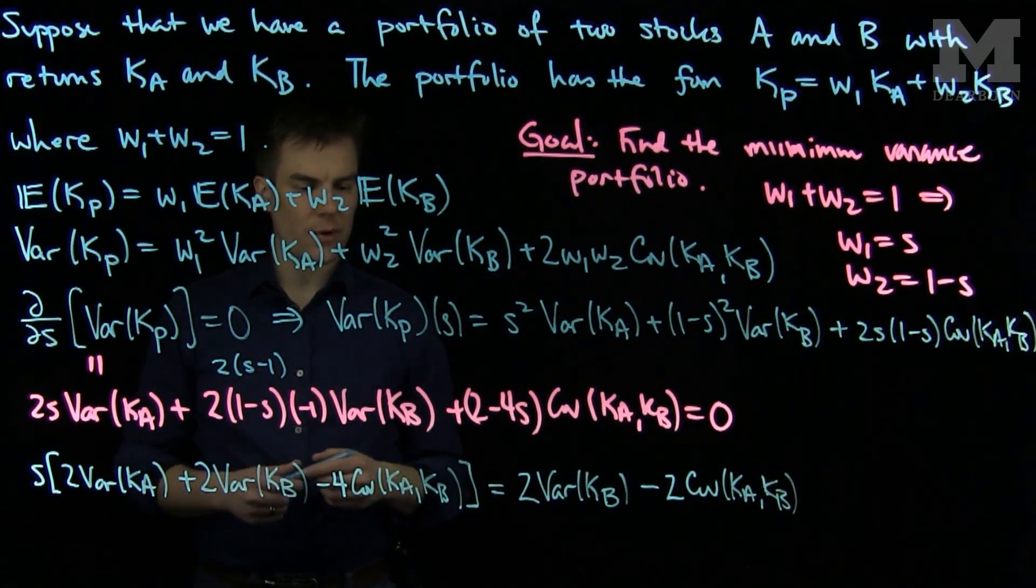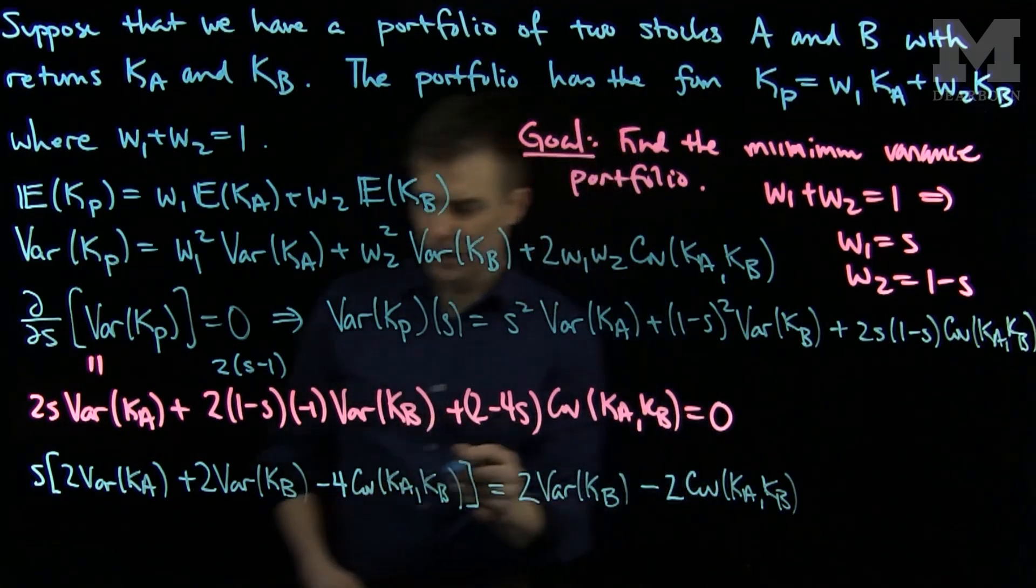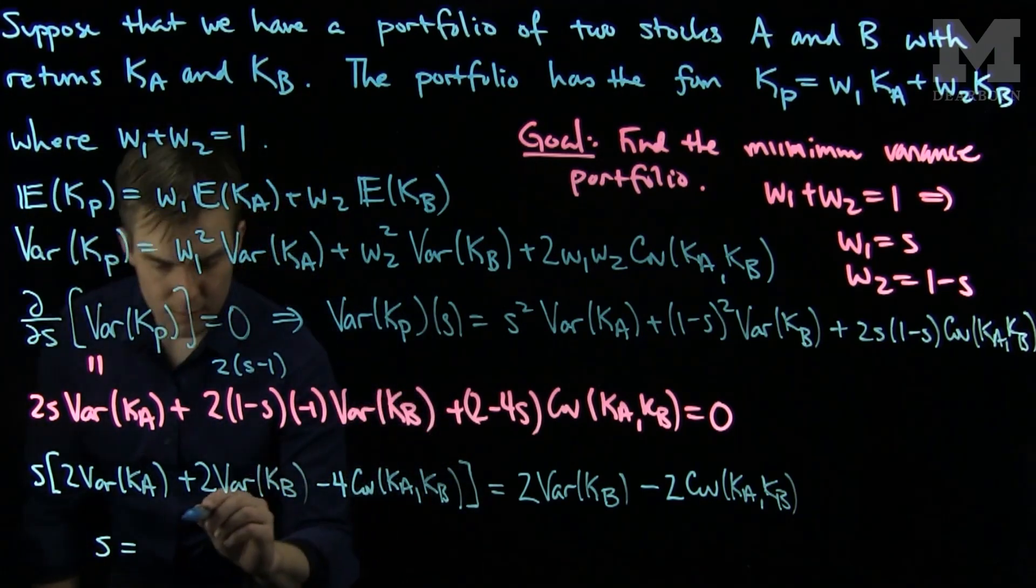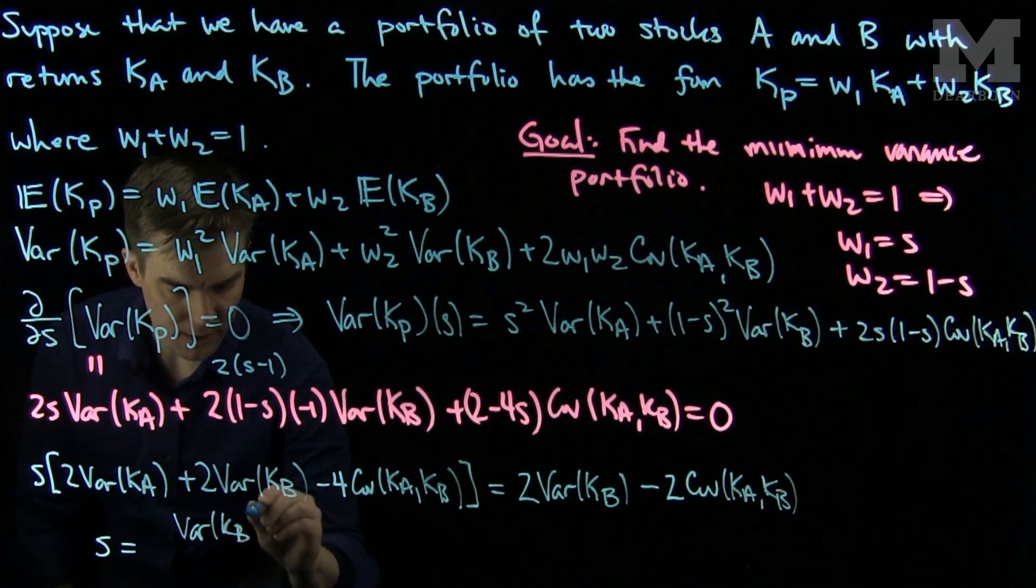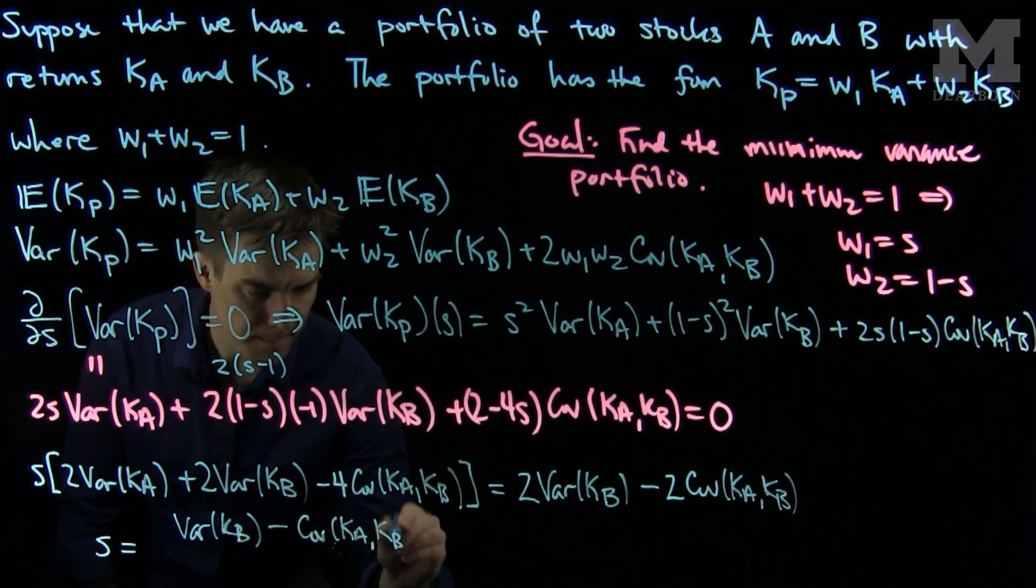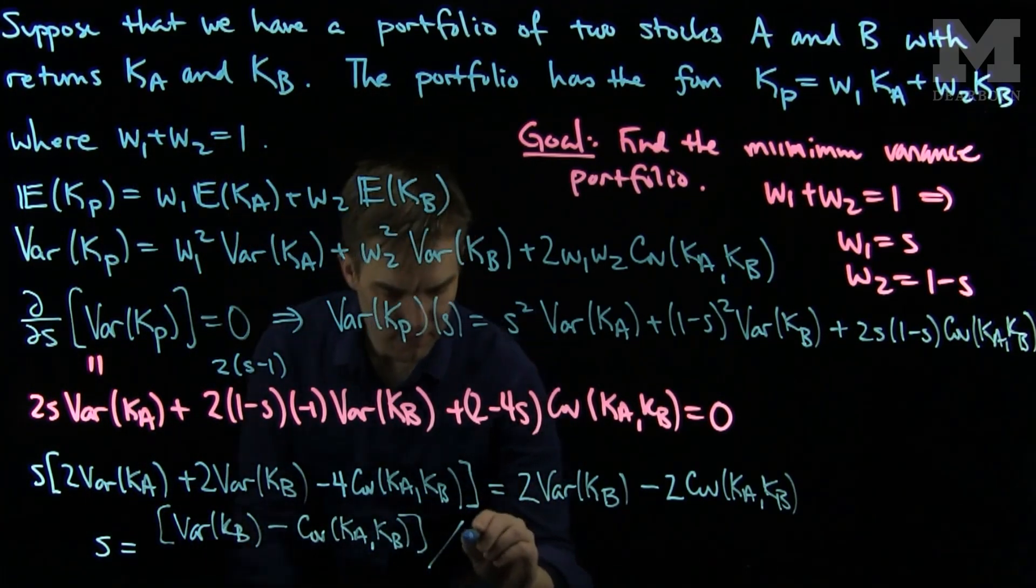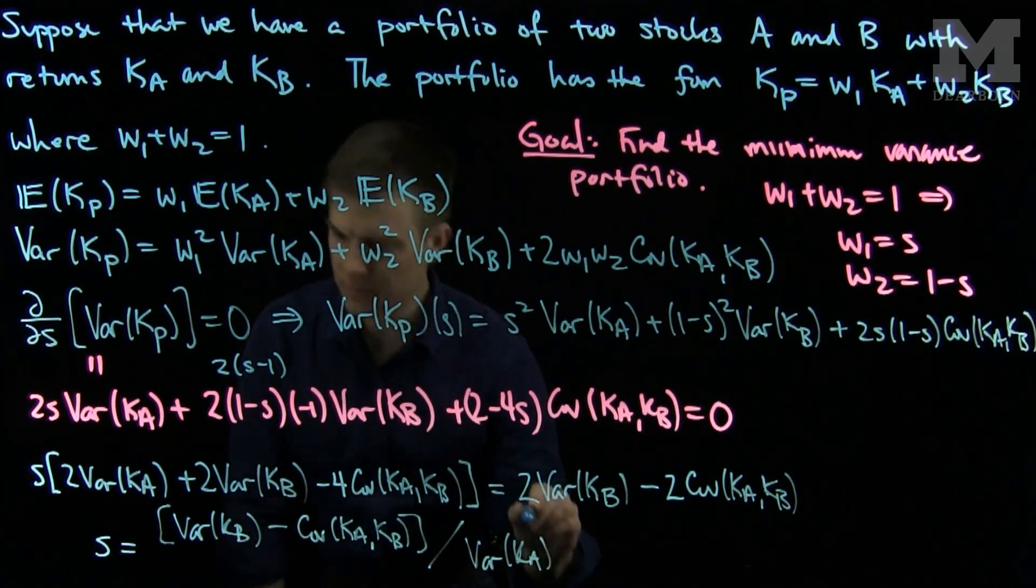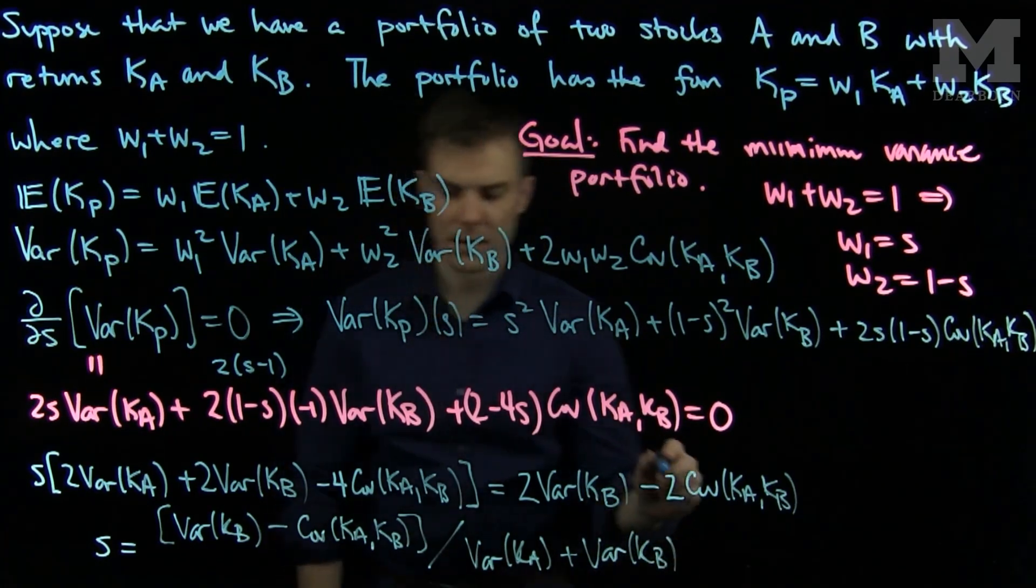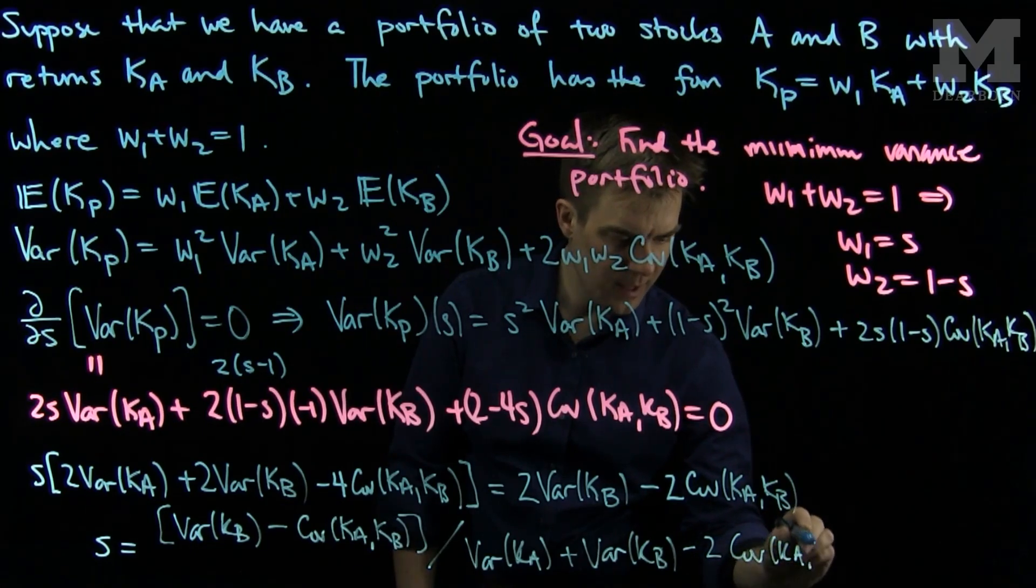There is a common factor of 2 everywhere. And so we see that if we set this equal, that S will be equal to the variance of Kb minus the covariance of Ka and Kb, this quantity, all divided by the variance of Ka plus the variance of Kb minus twice the covariance of Ka and Kb.